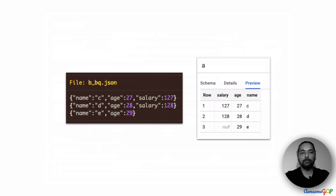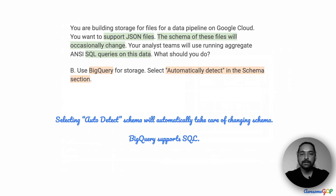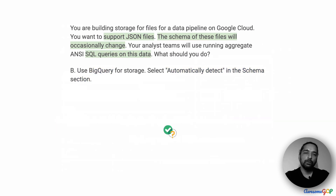I imported a file called b-bq.json with a different schema. Each of the JSON entries are one single line — with names C and D you also have a salary, while with name E we don't have a salary. So this is a different schema and BigQuery is still able to import it by just nullifying the missing field. BigQuery is able to auto-detect the schema, which takes care of the changing schema, and we already know that BigQuery supports SQL. So this seems like a workable option and we'll keep it as a candidate.